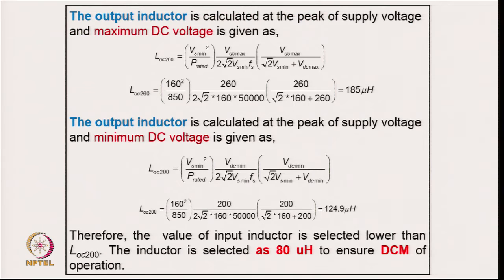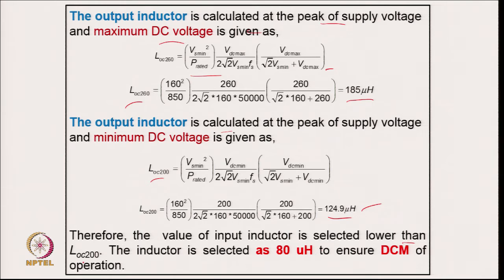The output inductor must also be designed for DCM. Calculated for maximum output voltage (260 V) it comes to 185 μH, and for minimum output voltage (200 V) it is 124.9 μH. To ensure DCM across all operating conditions, the inductor must be less than the lowest of these two values; therefore the output inductor is selected as 80 μH to ensure discontinuous mode of operation.